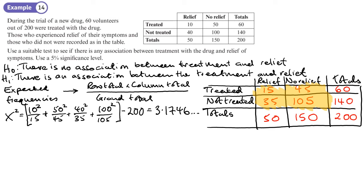Now we look up the critical value. For degrees of freedom: I have two rows and two columns, so just one degree of freedom. At the five percent significance level, looking that up in the table, we get 3.841.